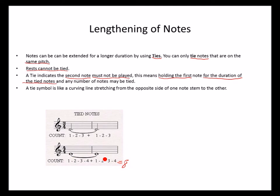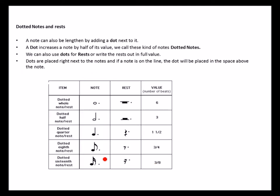Let's move on to dotted notes and rests. A dot is another way of extending or lengthening notes. A note can be lengthened by adding a dot next to it. A dot increases a note by half of its value, which is different from using a tie.